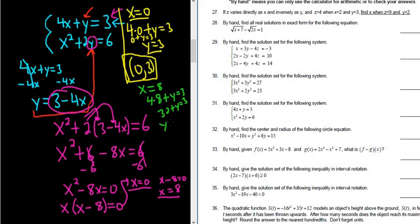Subtract 32, so you get y equals negative 29. Minus 32, minus 32. 3 minus 32 is negative 29. So we have 8, negative 29. So parenthesis 8, negative 29. And that is the other solution.